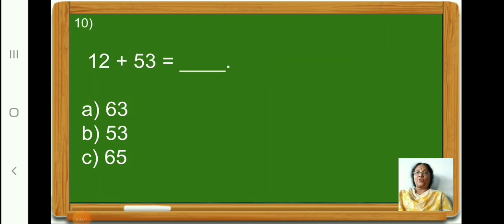Children, now let us add 12 plus 53. First we have to add the numbers in the 1's place. 2 plus 3 is 5. Now, let us add the numbers in the 10's place. 1 plus 5 is 6. Therefore, 12 plus 53 is equal to 65. So, children, let us put a tick on option C, 65.